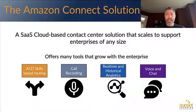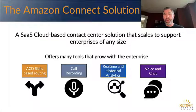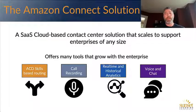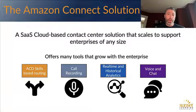Amazon Connect is a SaaS solution — a software as a service cloud-based solution. One of the real benefits of it is it's scalable, going from a small business all the way up to a large enterprise or government institution. Features include ACD skills-based routing, call recording, real-time and historical analytics, and support for both voice and chat for all contacts.